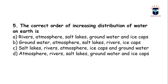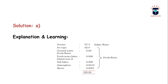Next question: the correct order of increasing distribution of water on Earth — the answer is A: rivers, atmosphere, salt lakes, groundwater, and ice caps. Rivers have a 0.0001% share, atmosphere has 0.0019%, salt lakes and fresh water lakes and inland seas have 0.009%, groundwater and fresh water contains 0.68%, and ice caps have 2% of the water. Oceans have 97.3% of the water, which is saline water.